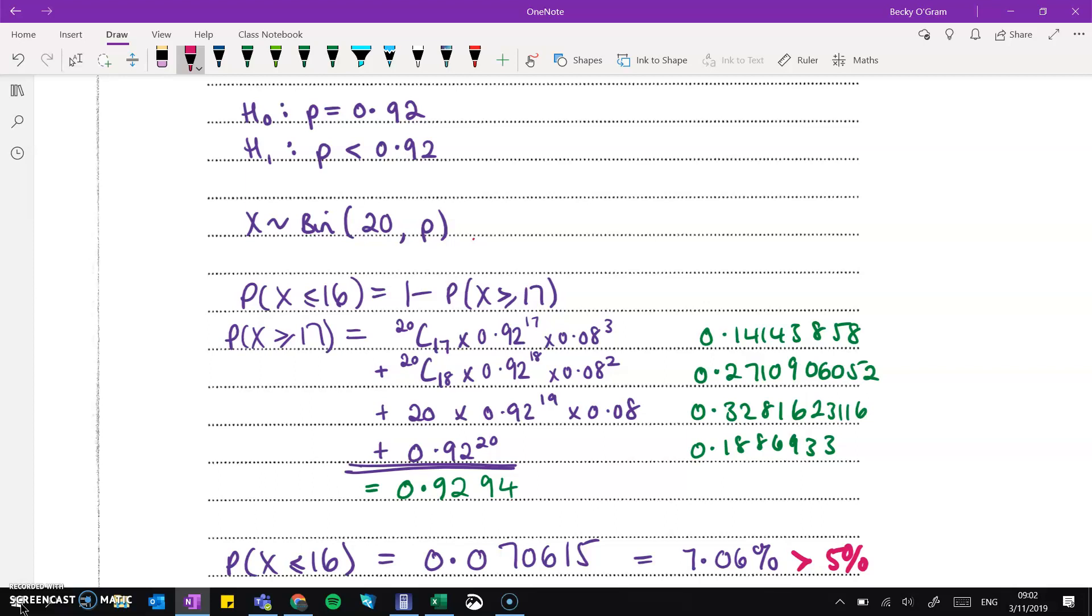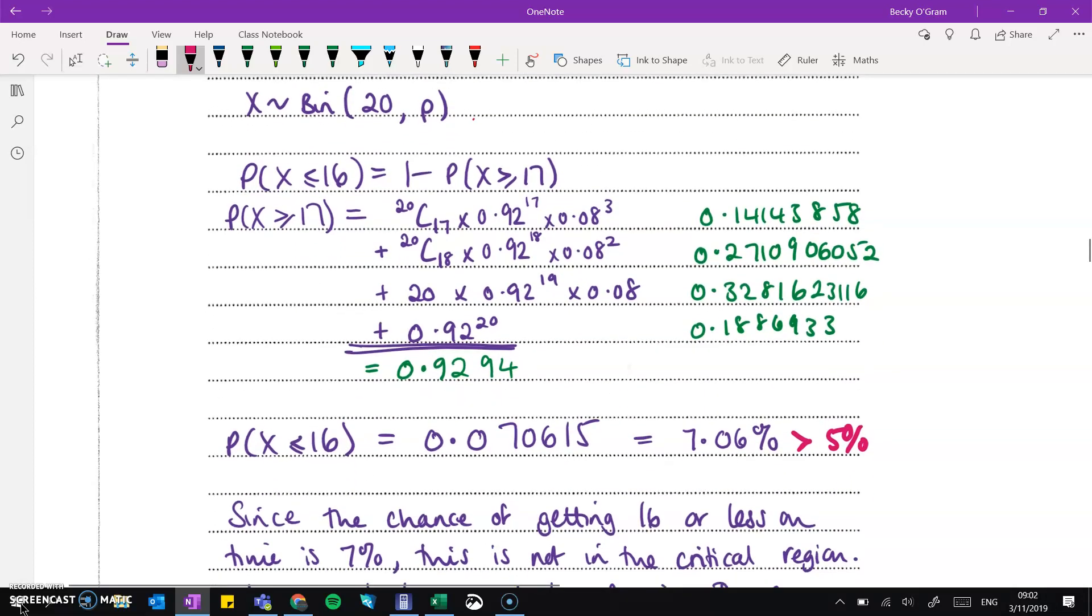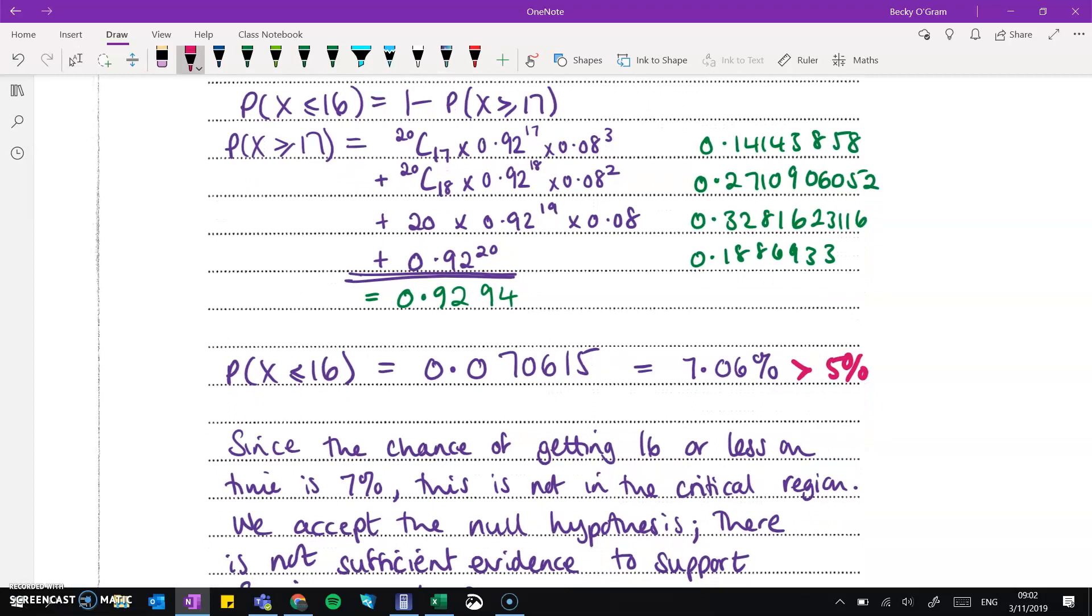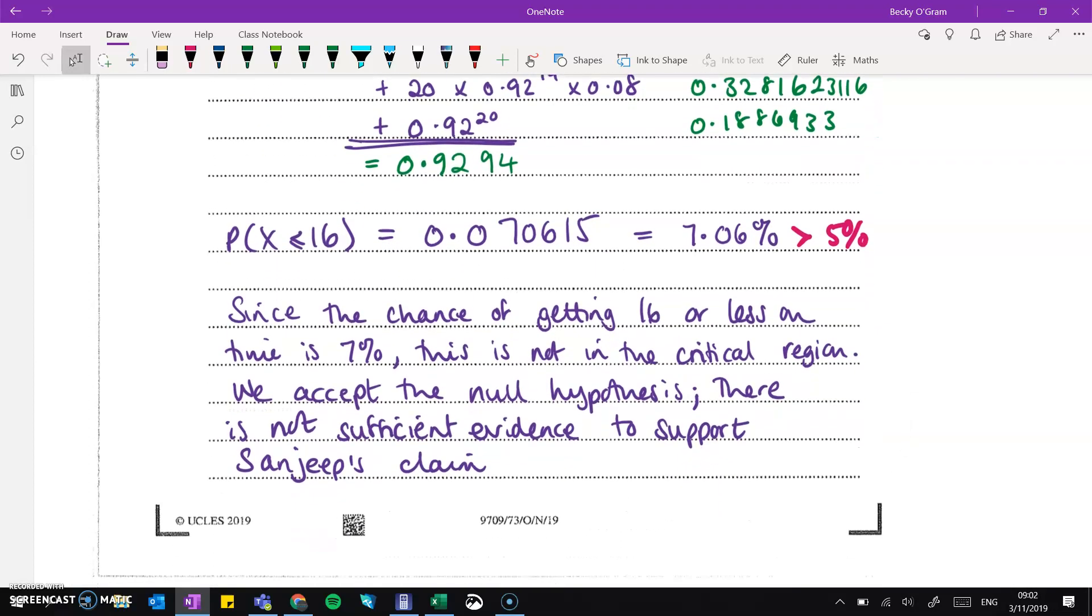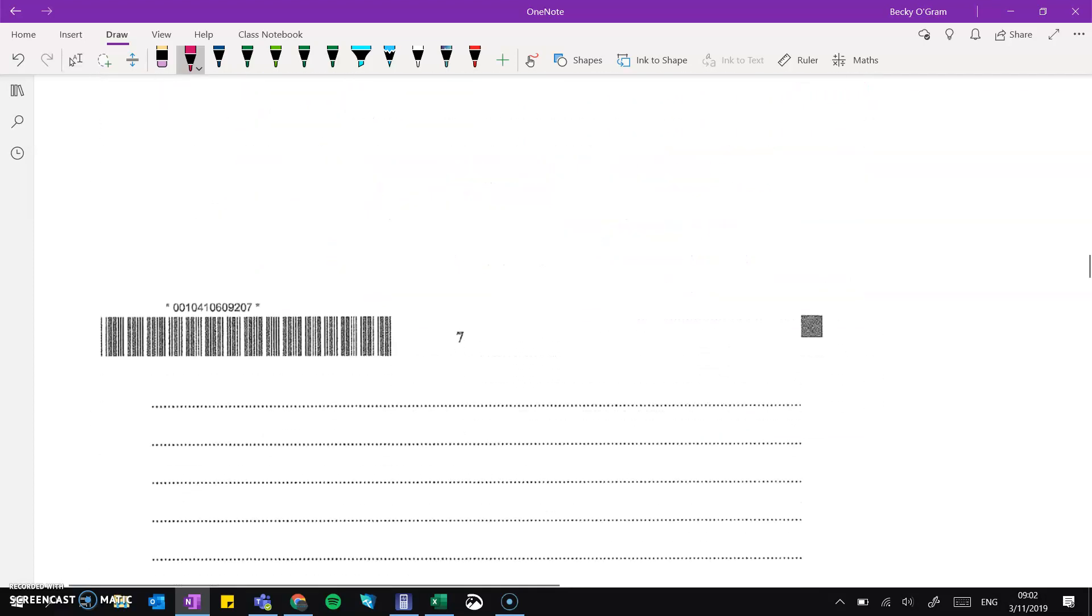And now this is just my working out here. The green was me keeping track of what each of these lines were equal to for it being greater than or equal to 17 and then take that away from 1. So the probability of being less than or equal to 16 is around 7%, which is bigger than the 5% we were looking at the significance level of. So since that chance is 7%, this is not in the critical region, we accept the null hypothesis. And there's not sufficient evidence to support Sanjeev's claim that the trains being on time is less than 92%.